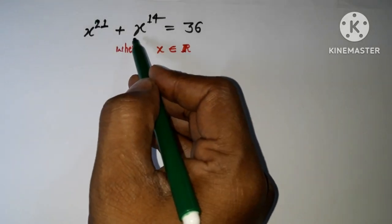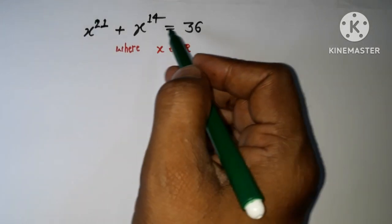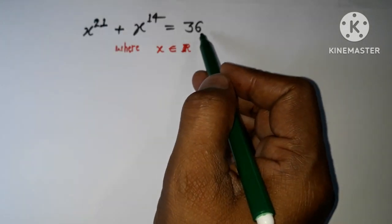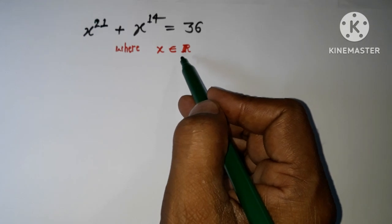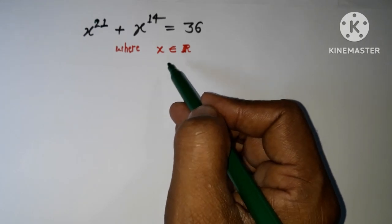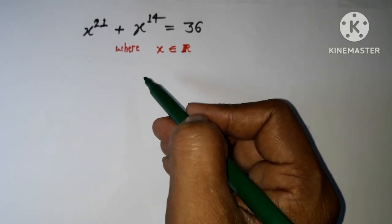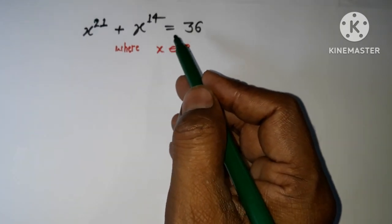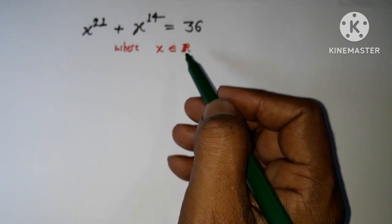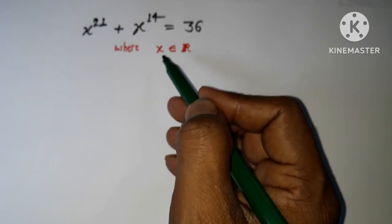x to the power 21 plus x to the power 14 is equal to 36, where x is an element of real numbers. I need to get the value for x that is a real number.